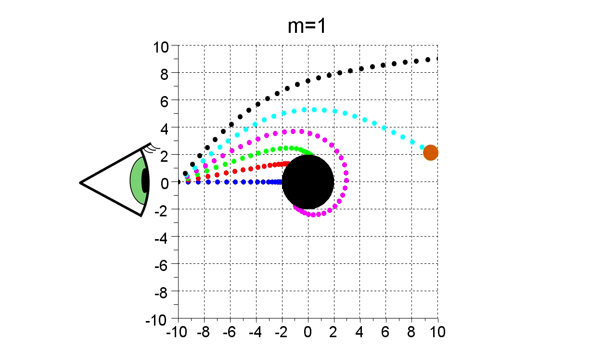Say the 40 degree pulse came from this brown object. If the black hole were not there, you would see it at an angle of a bit less than 10 degrees.